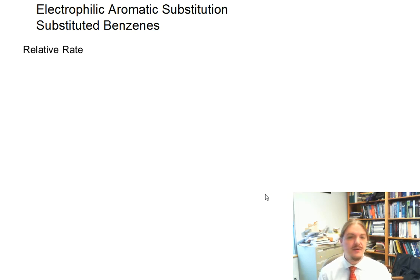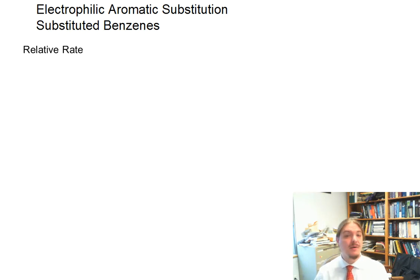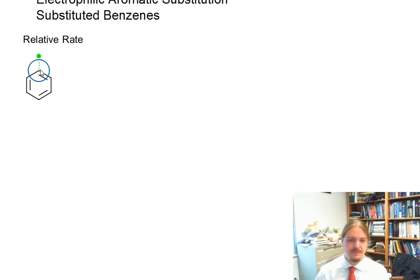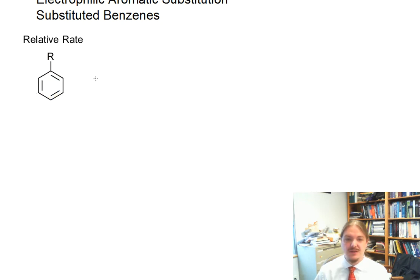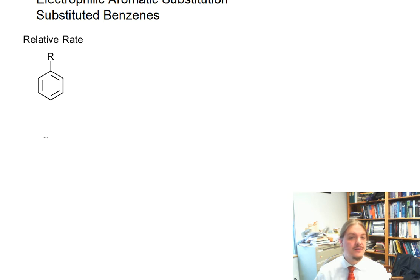In this video I'm going to talk about the electrophilic aromatic substitution reactions of substituted benzenes, focusing on the relative rate of reaction. I'm not going to talk about any specific substitution reaction at the moment. In the previous video I shared that having a substituent on benzene can change the rate of reaction — make the reaction faster or slower — and can provide an opportunity for regioselectivity. Regioselectivity is going to be the topic of some upcoming videos.